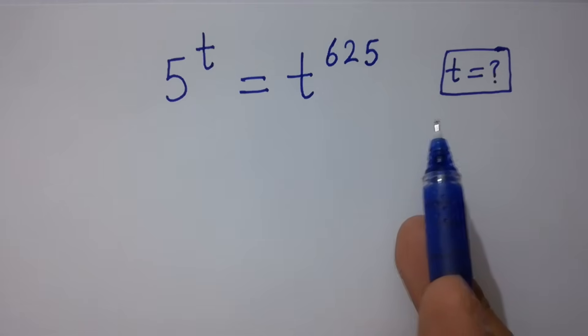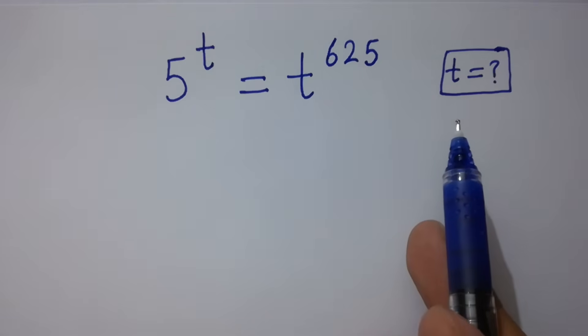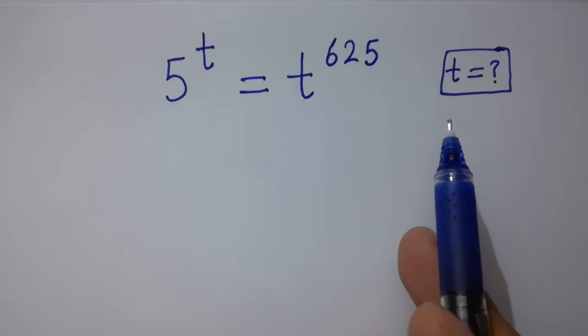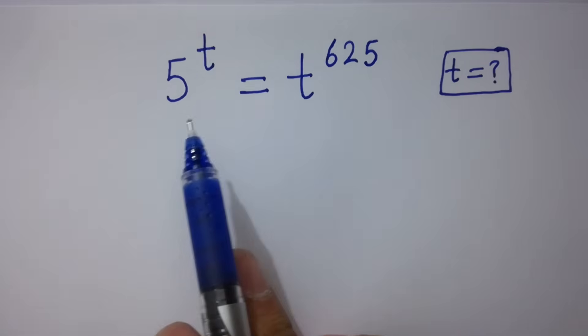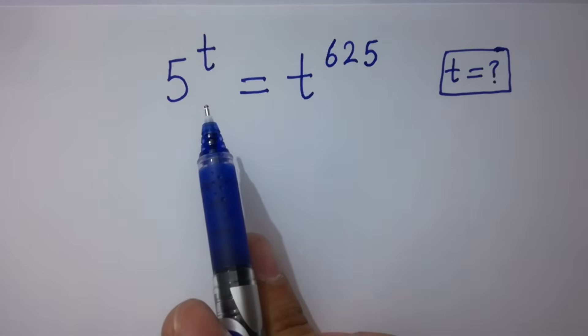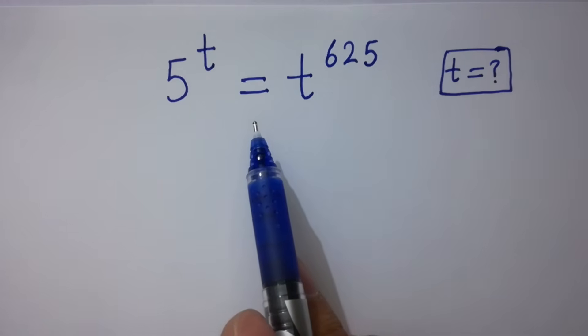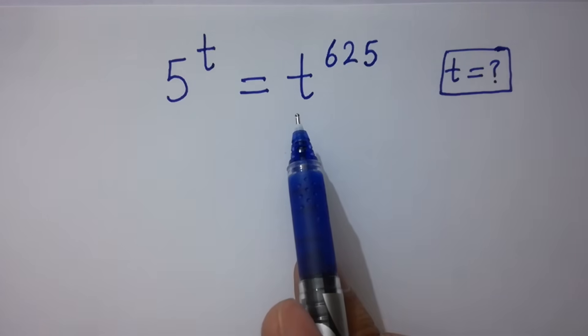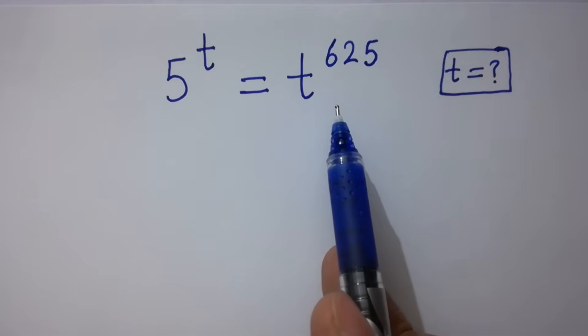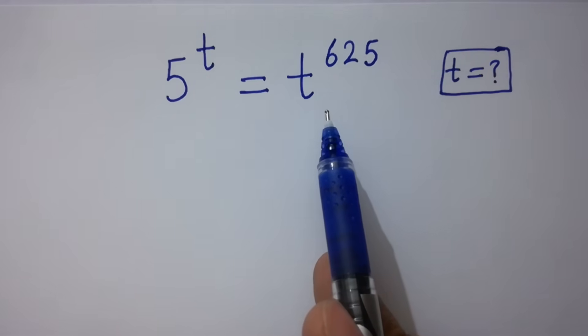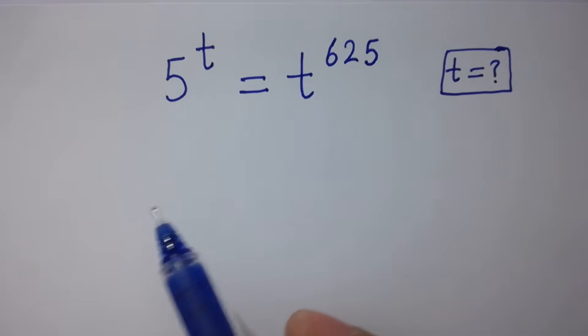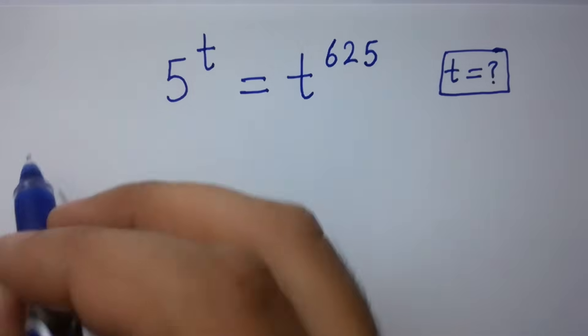Hello friends. Find the value of t if 5 to the power t equals t to the power 625. Let's have a solution.